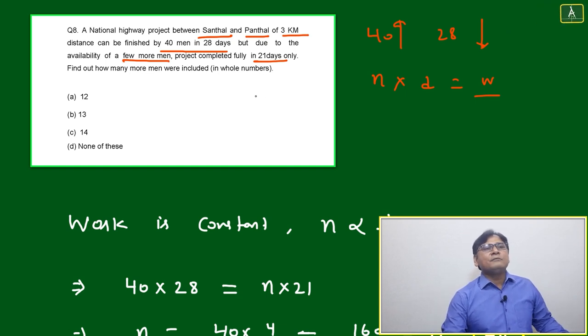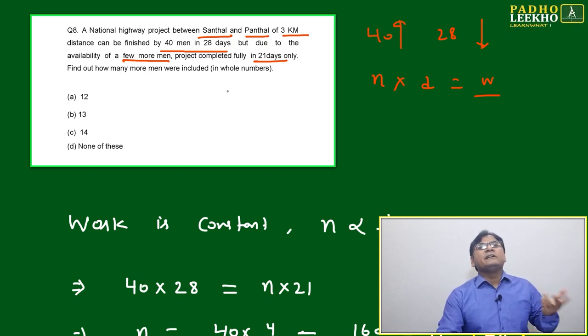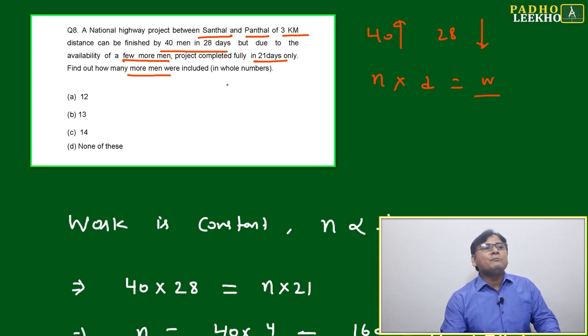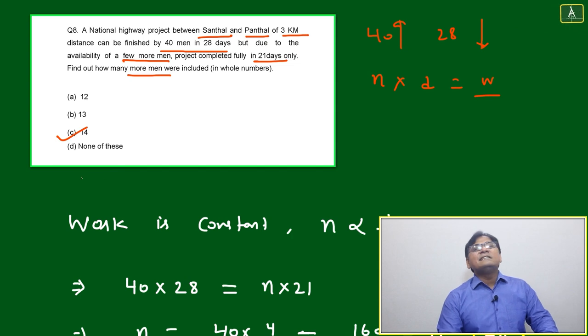What is the question asking? Find how many more men were included, in whole number. Just by seeing itself you can mark the 14, there is no issue.